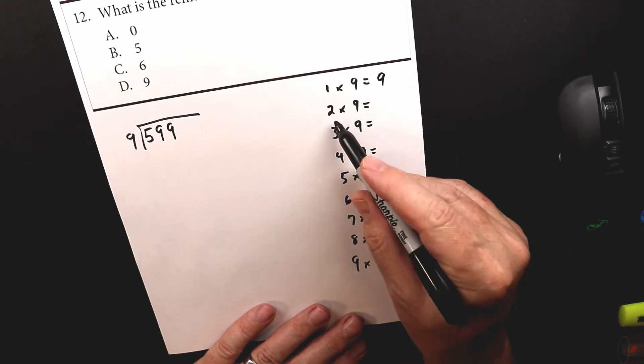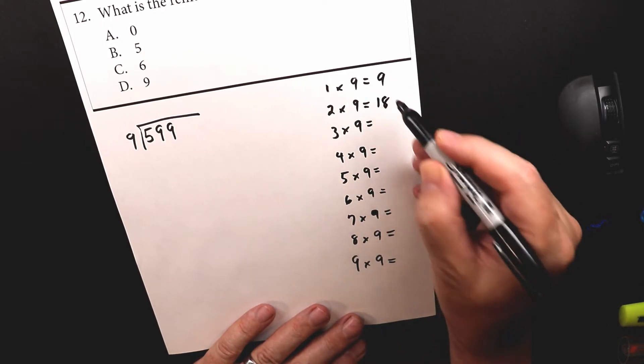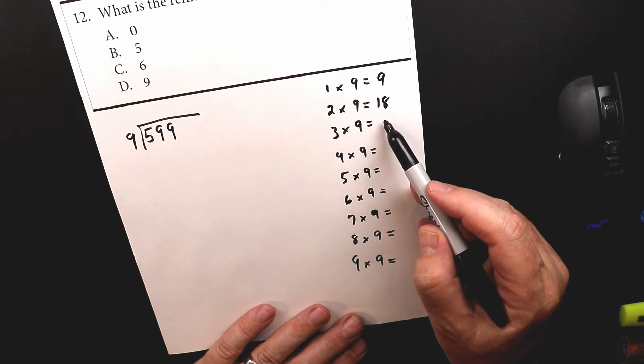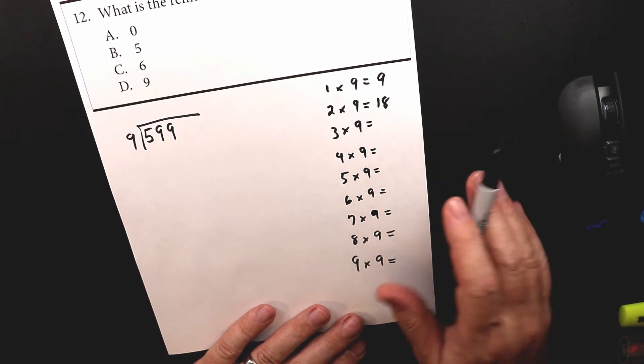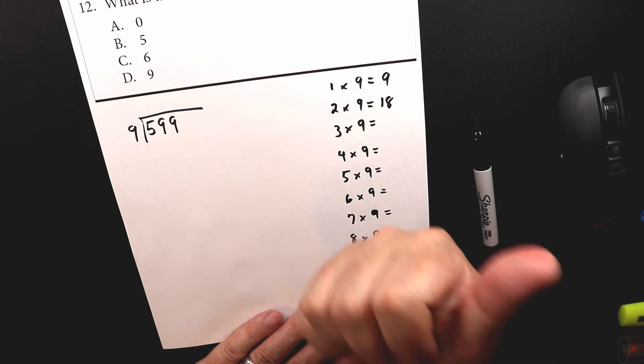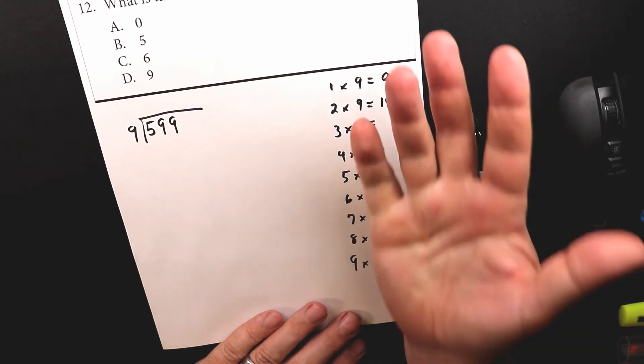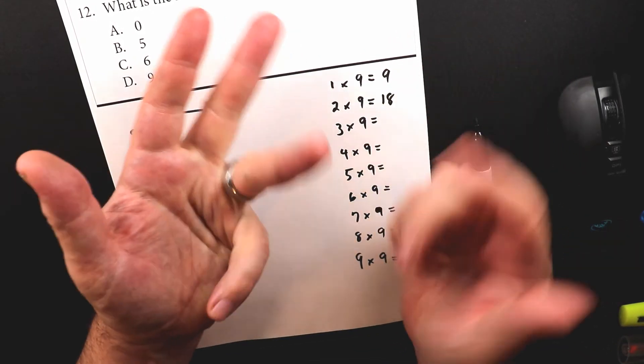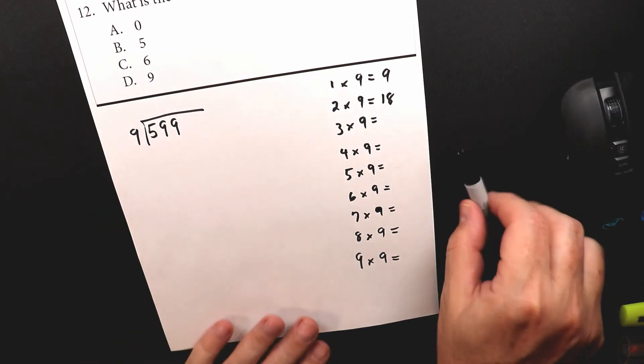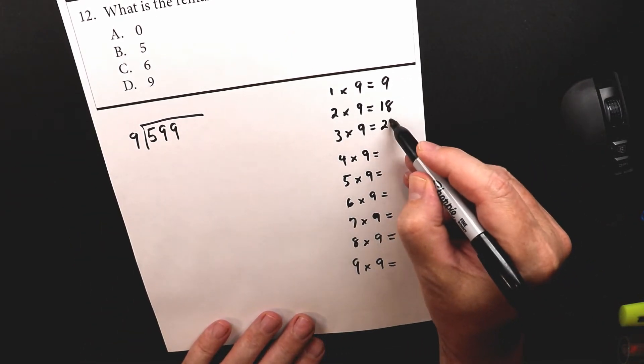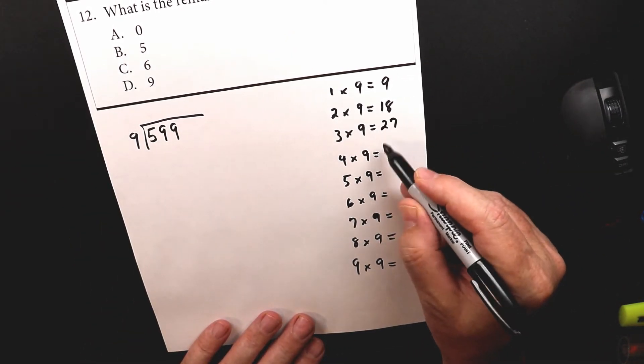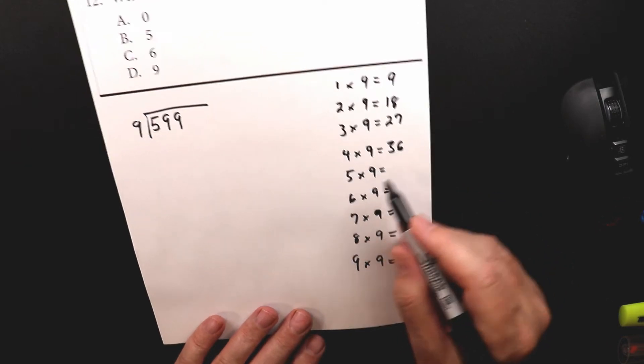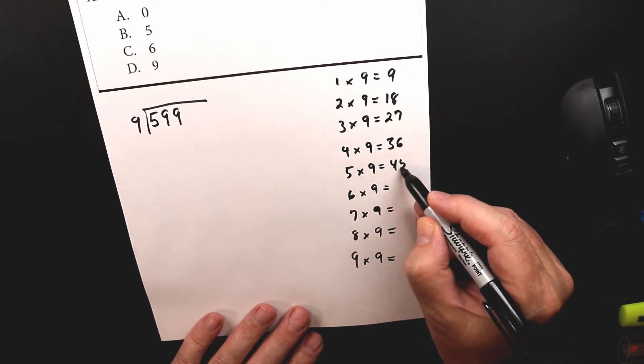I think seven times eight is the one that really throws people off for some reason, but that's 56. Anyway, one times nine is nine. Two times nine is 18. And again, if you just want to figure out what the next one is, you take 18, use your fingers, and you add nine. So 18, 19, 20, 21, 22, 23, 24, 25, 26, 27. Don't feel bad about using your fingers. Four times nine is 36. Five times nine is 45.